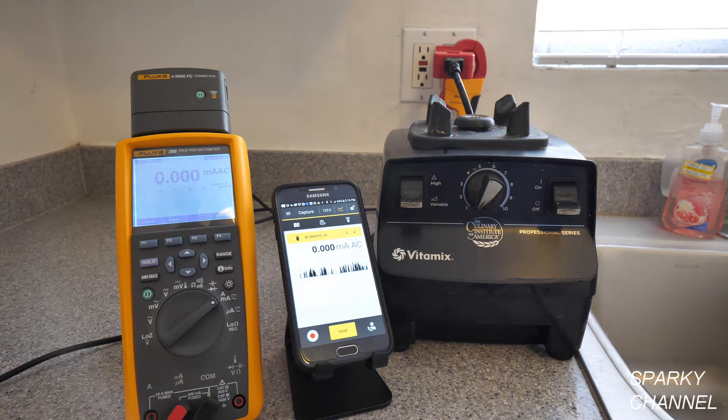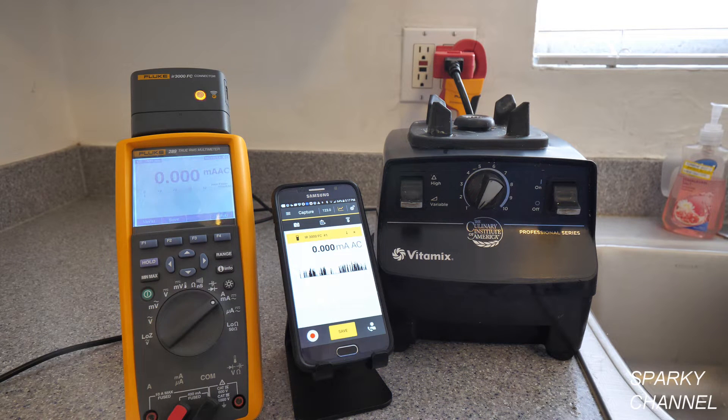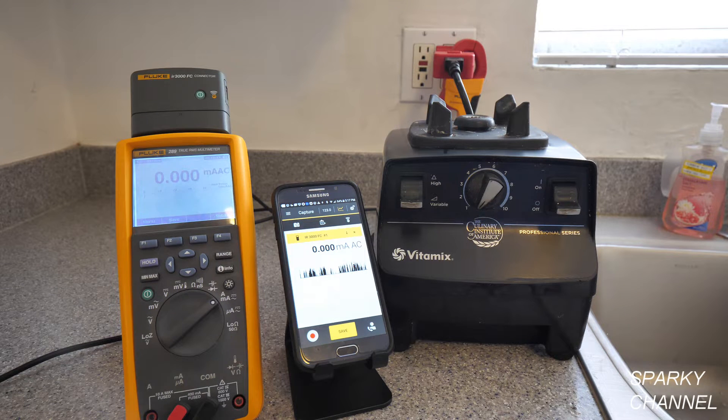So these are capable of using a lot of amperage. And you need to know about this in case you're having trouble with a circuit blowing in your kitchen or you're designing a kitchen, you're remodeling and so forth. You need to know, does this need a dedicated circuit running to it, a dedicated 20 amp circuit? Or can you put other receptacles on the same circuit as your Vitamix or Ninja or Blendtec?